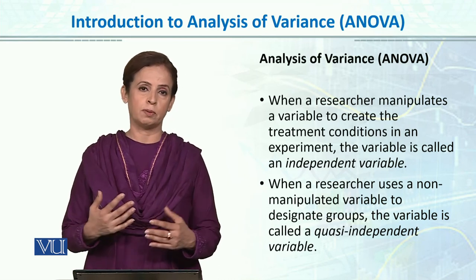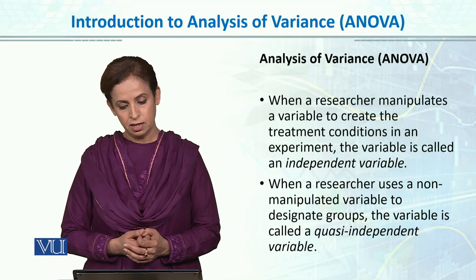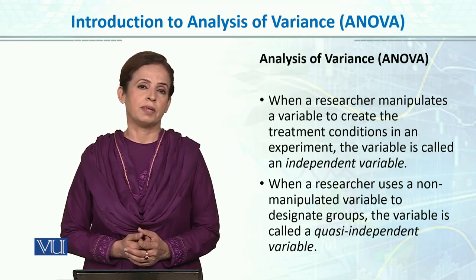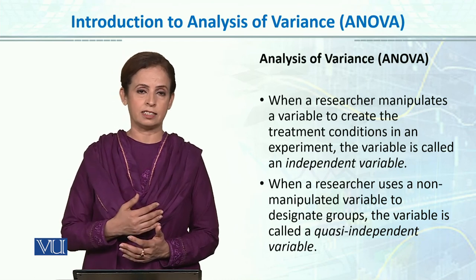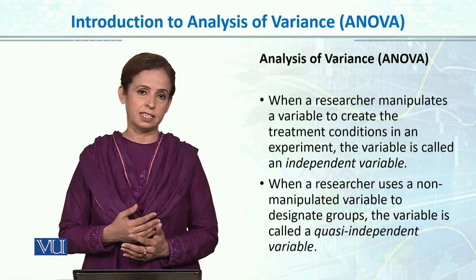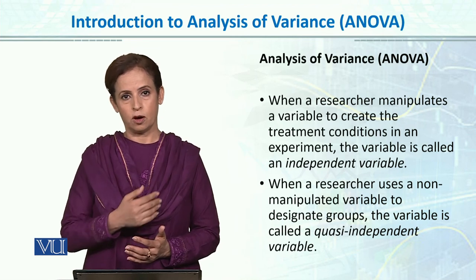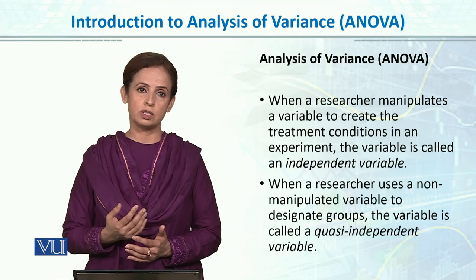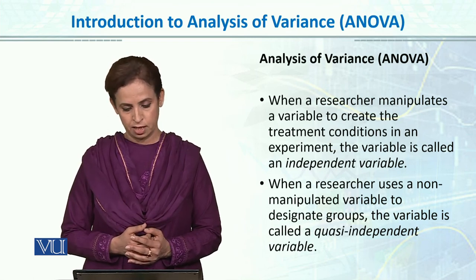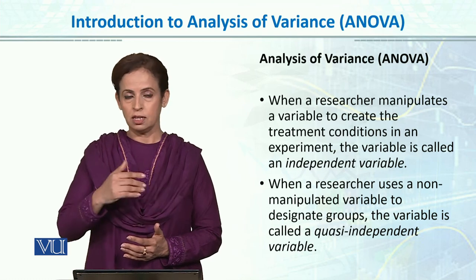There are also conditions where we compare groups without manipulating the variable ourselves. A non-manipulated variable used to designate groups is called a quasi-independent variable. For example, if we want to see the effect of learning age level, we compare three groups — six years, eight years, and ten years — and examine the learning curve of each group while teaching them something. That age variable is the quasi-independent variable, since it was not manipulated by the researcher.